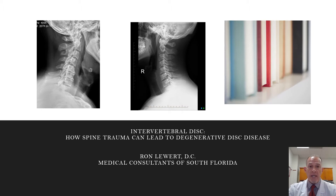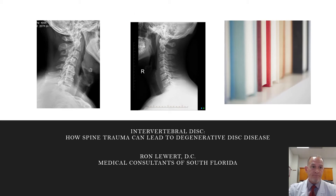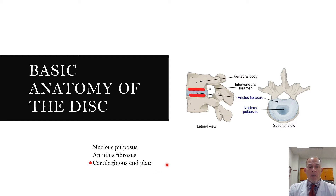Let's start with the basic anatomy. We'll get into the functional anatomy and then some of the differences between normal disc and injured disc. Here are the three basic parts of the intervertebral disc. First is the nucleus pulposus — that is the center of the disc, located here in the lateral view.